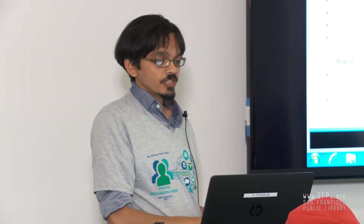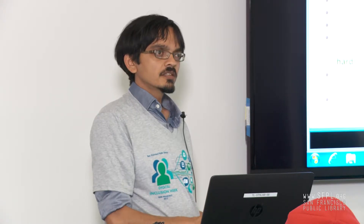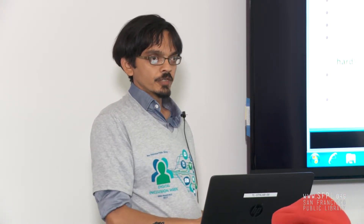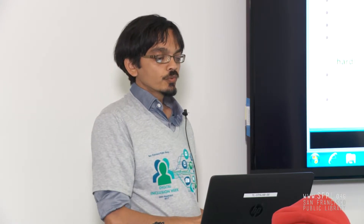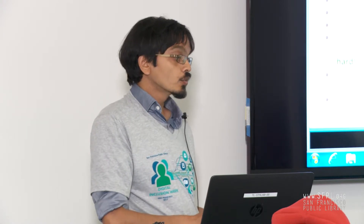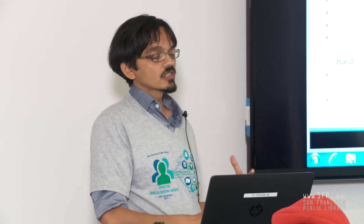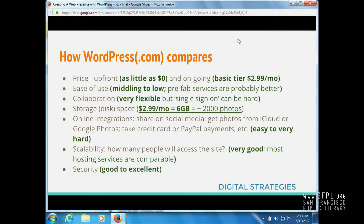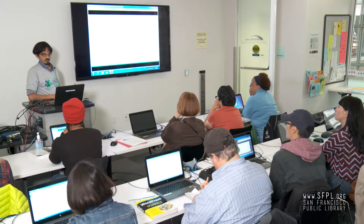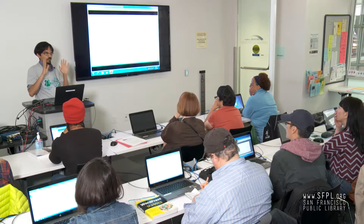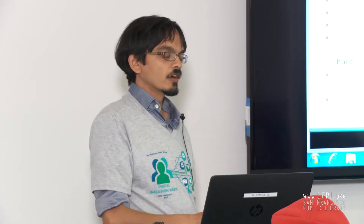Setting it up is $0 — we'll see that today. Their basic tier is $3 a month, which I think is pretty darn good. Ease of use: WordPress.com is generally super easy. WordPress the software is fairly easy, though there is a little bit of a learning curve, and we'll sort of see the pieces you have to get your mind used to. I wouldn't say they're easier than some of the prefab services. So if you're really looking for no headaches, WordPress might not be the answer for you — I'll put that out there up front.